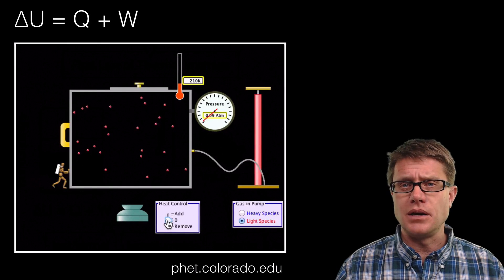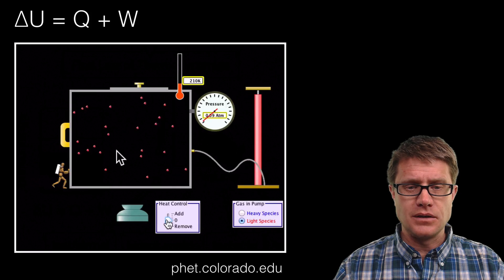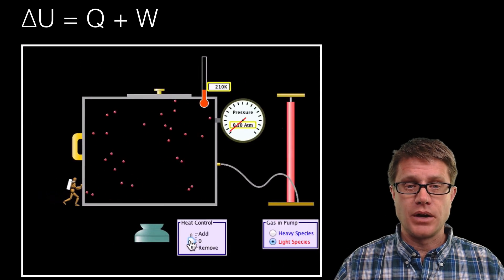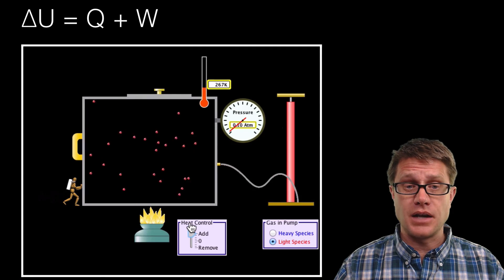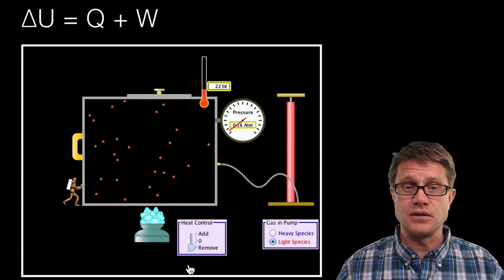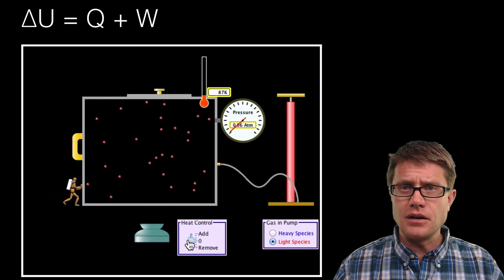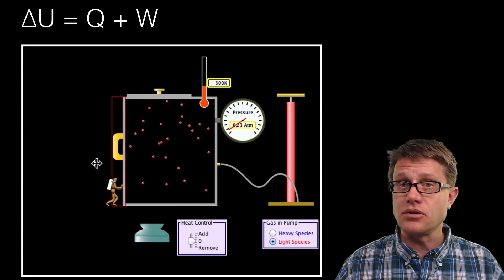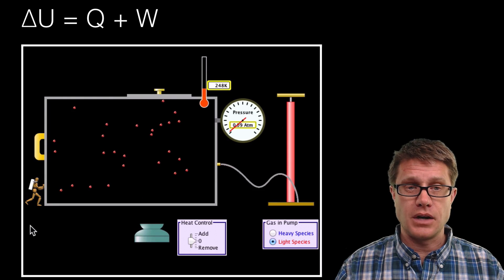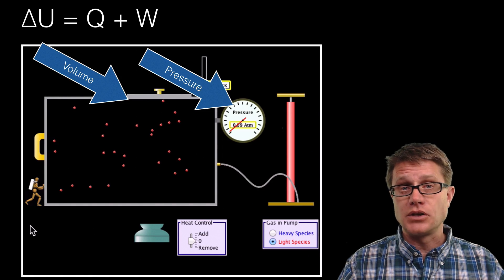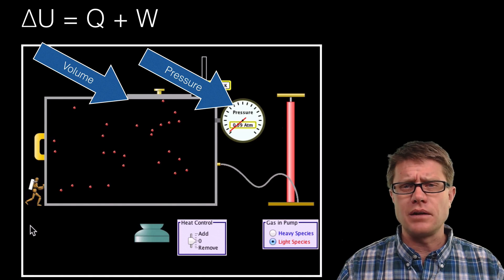Let us start with a PHET simulation. We have gas molecules on the inside. We can add heat here, and we can push back and forth on the piston to do work — applying a force over a given distance. The energy is in the molecules on the inside. When I add temperature, I increase their speed and therefore their energy; the energy of the system increases. If I cool it down, the energy decreases. We can also push in on the piston — the pressure and the internal energy inside increase. The two things we can measure are the volume and the pressure, and by tracking those over time we can figure out what kind of process is going on.